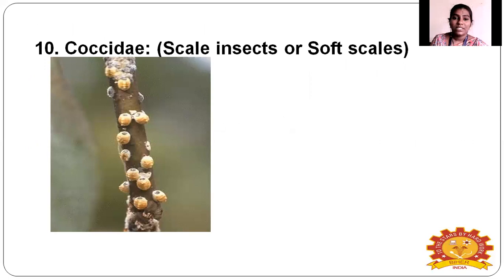Up to this, these are all the important families coming under Homoptera. So, Insect Order Hemiptera — the etymology: hemi means half, ptera means half-winged insect. There are two classifications: Heteroptera and Homoptera. Thank you.